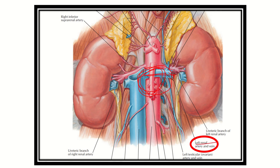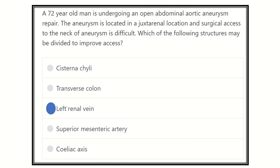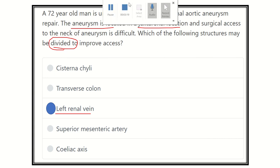It is the left renal artery and vein. Actually, this is the left renal vein, because the artery is more lateral and it is not required to reach the aneurysm. So our final answer is the left renal vein — this structure has to be divided to improve the access to reach the aneurysm, which lies in the juxtarenal location. Thank you very much.